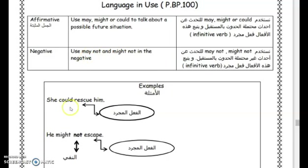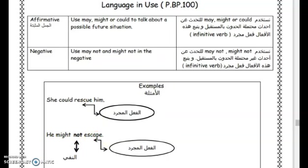Here we have examples. "She could rescue him." Here we have could, which is the modal, and the verb after could is rescue — which is infinitive. Now look at the next example: "He might not escape." Here we used the negative form might not, and the verb escape is also an infinitive verb.